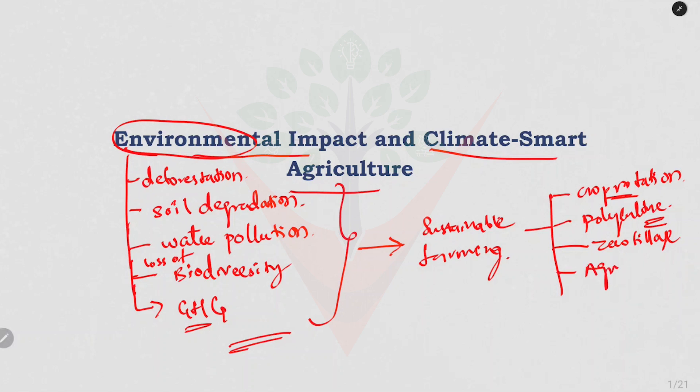Agroforestry involves integrating trees and shrubs into a farming system. It enhances biodiversity, prevents erosion, and also provides additional income sources through timber or fruit.